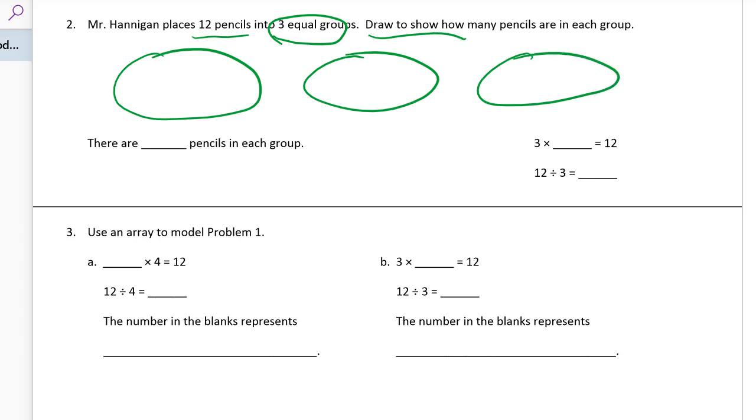1, 2, 3, 4, 5, 6, 7, 8, 9, 10, 11, 12. I'm stopping at 12 because there are only 12 pencils. They all have the same. There's 3 equal groups. There's 4 pencils in each group.